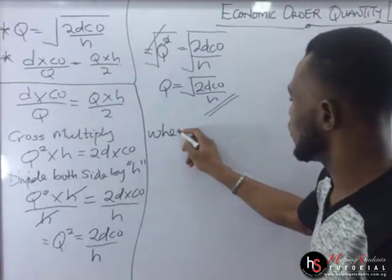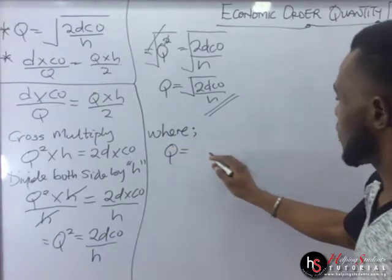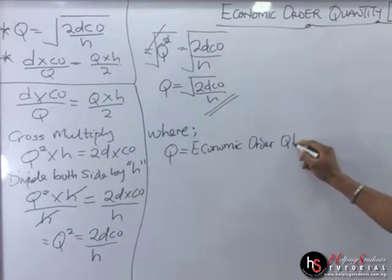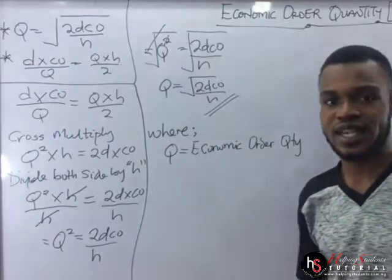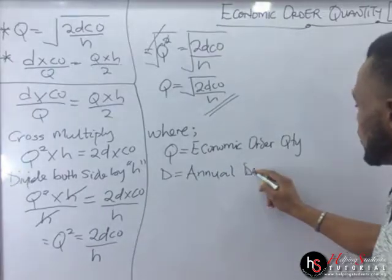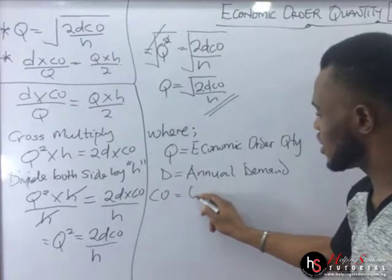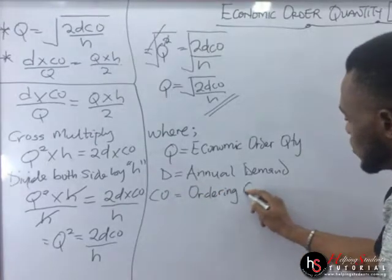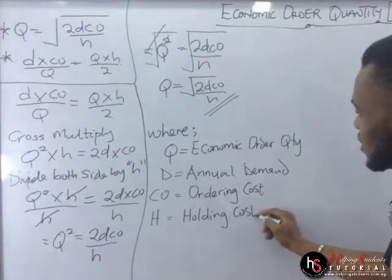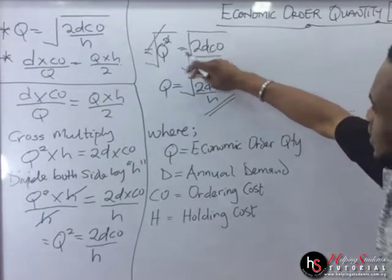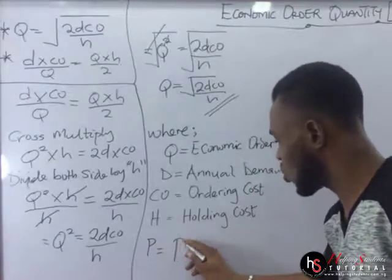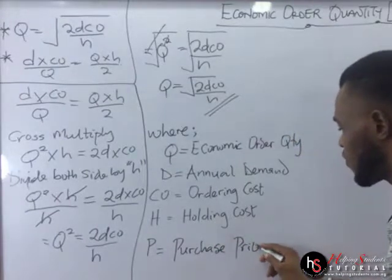Now there are some terminologies we need to take note of. Q represents the economic order quantity — in some questions, you might be told to look for the optimal order quantity; it is the same thing. D represents the annual demand. CO is the ordering costs. H is the holding costs. And P, which is not in the formula but is also very, very important, represents the purchase price.